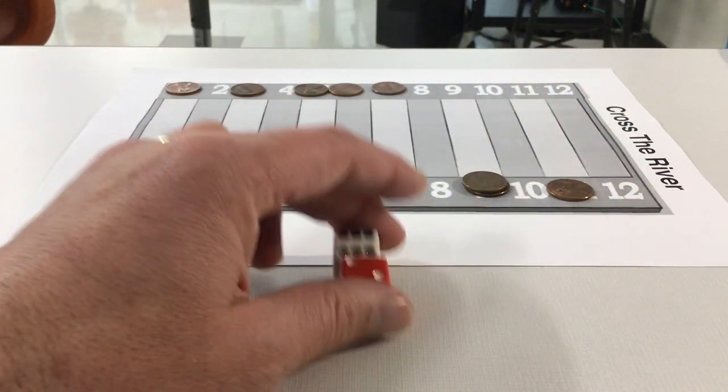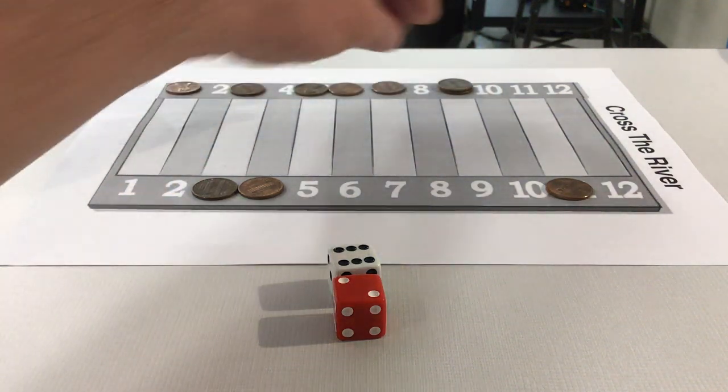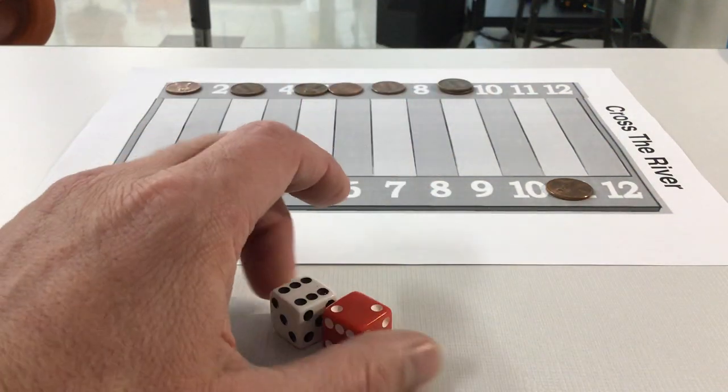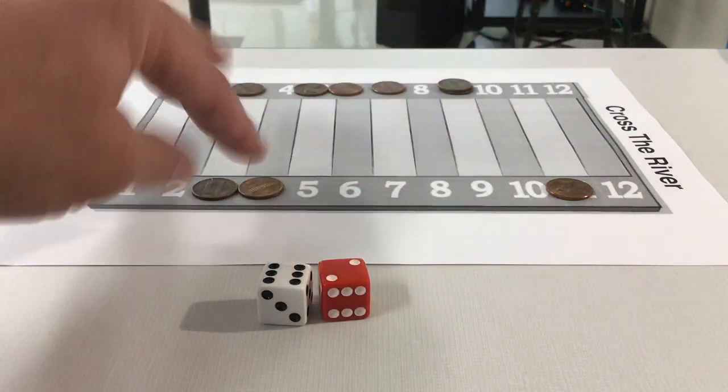And then let's say this side rolls a nine, then both pennies go across. Basically you're just trying to get as many pennies across the river as possible. So be smart about where you put your pennies.